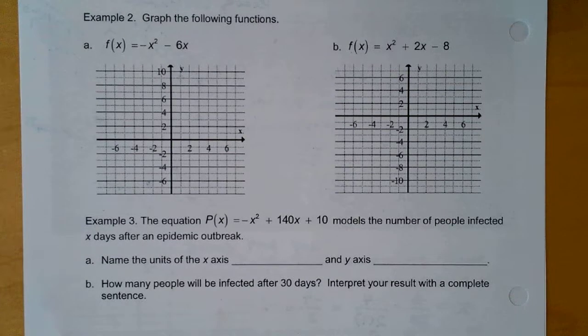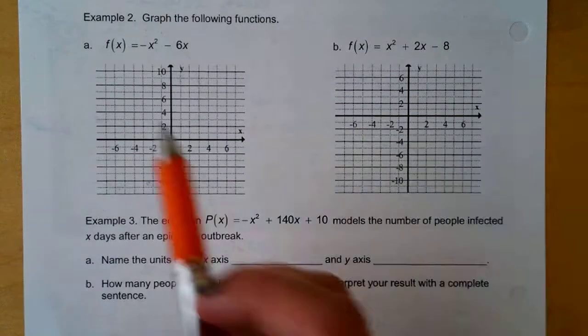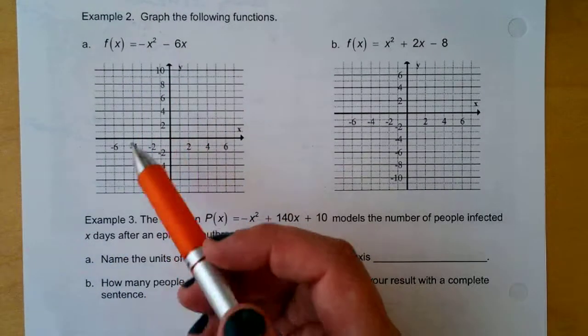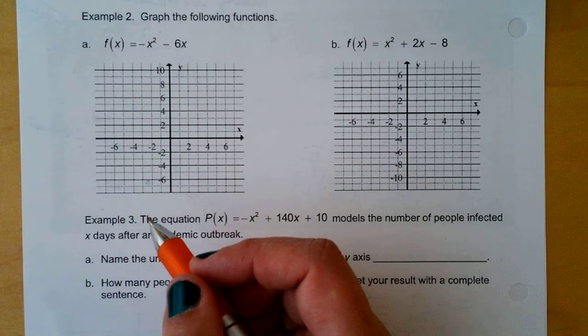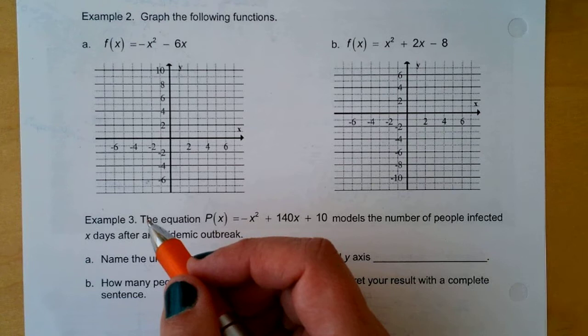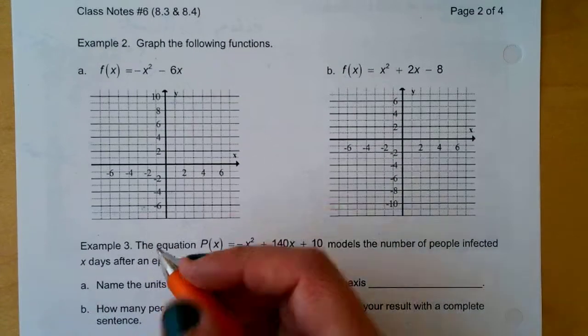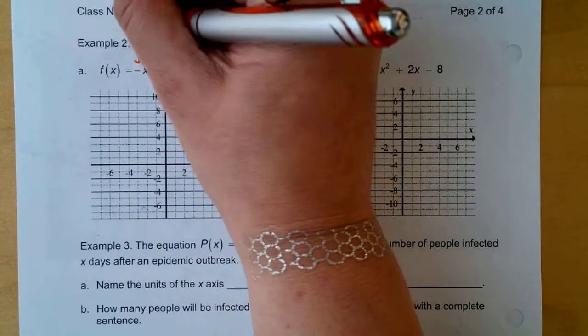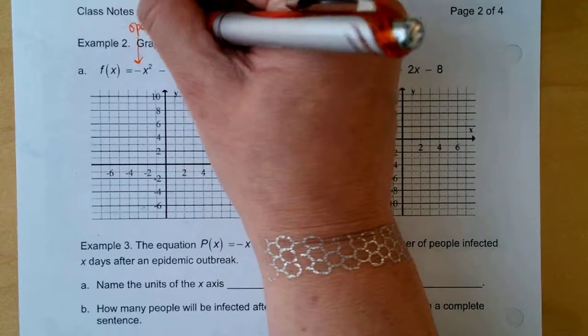All right, let's try two more. So the first thing you want to observe is what? You notice that this parabola is going to open upward or downward. And what about the equation tells you that? Yes, so this one is going to open downward.